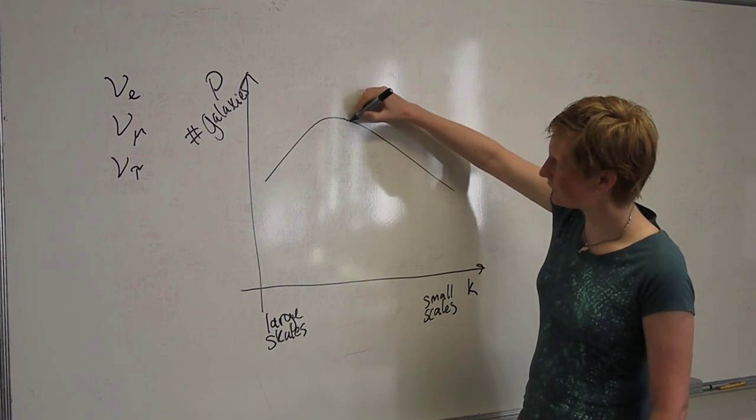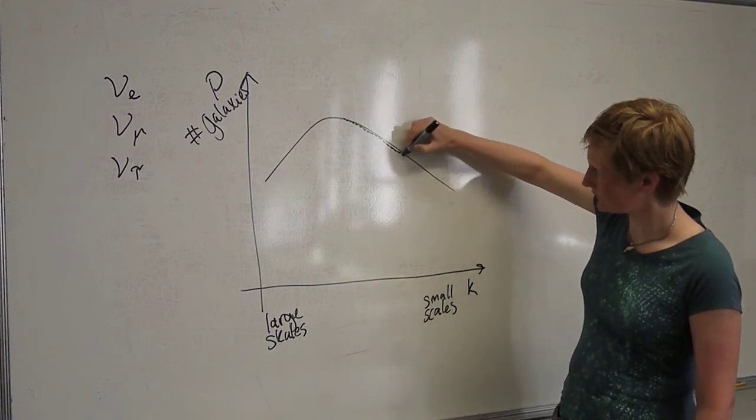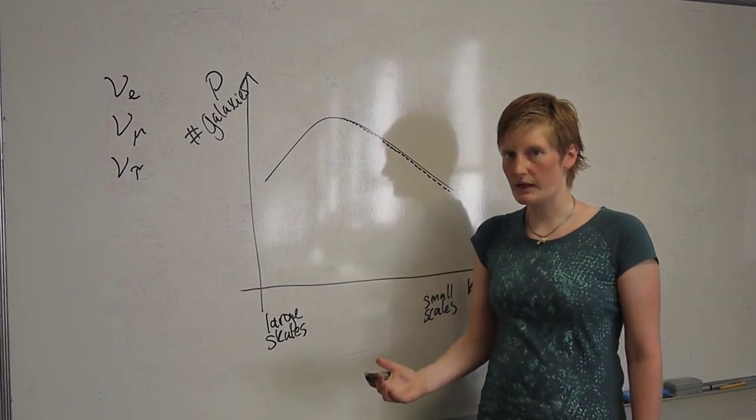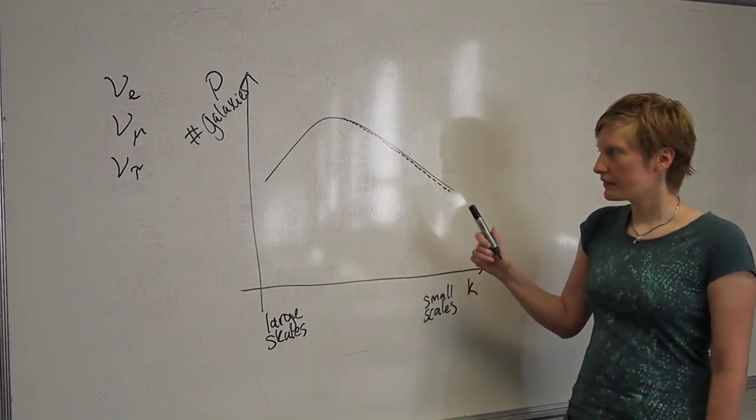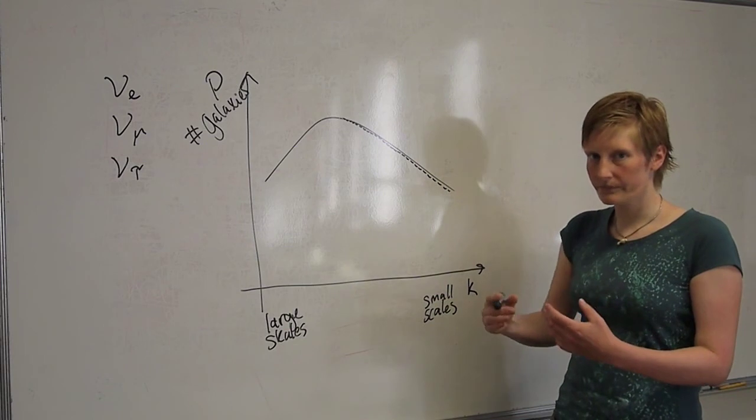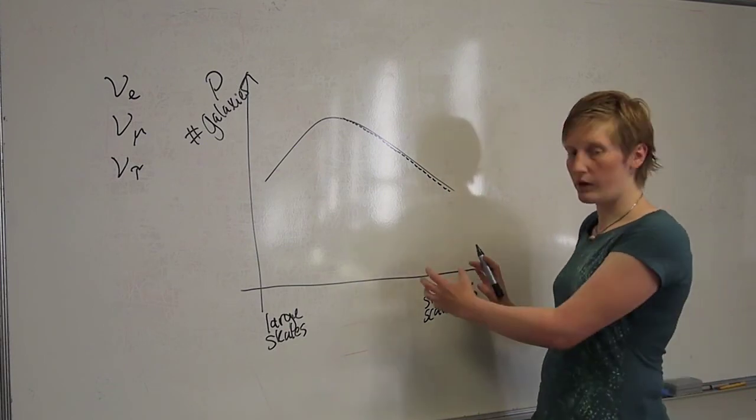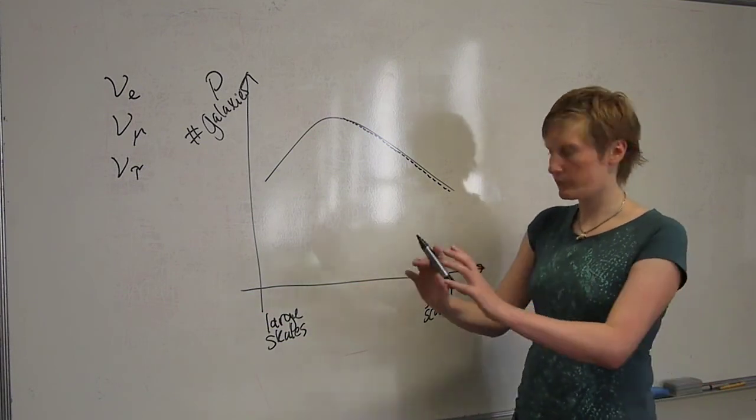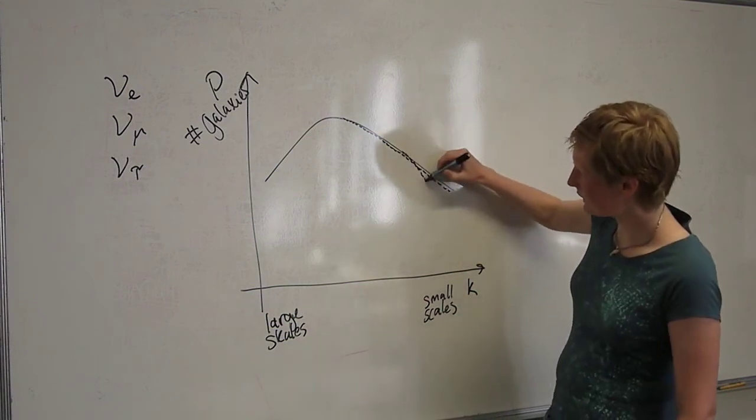On the other hand if the neutrinos have a relatively large mass compared to what's possible, then they will move slower so they will affect only the small scales but they will affect them a lot more because they have a lot more mass to push with. So we'll have something that looks like this.